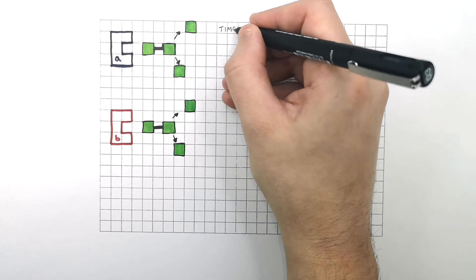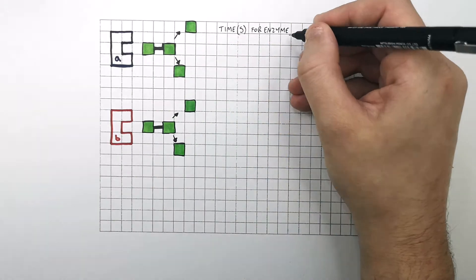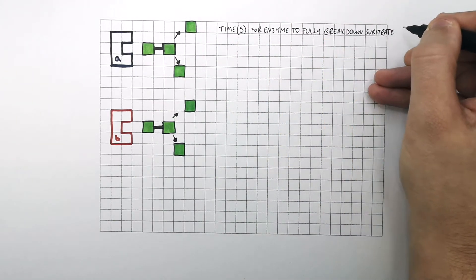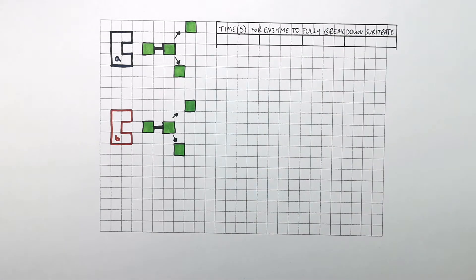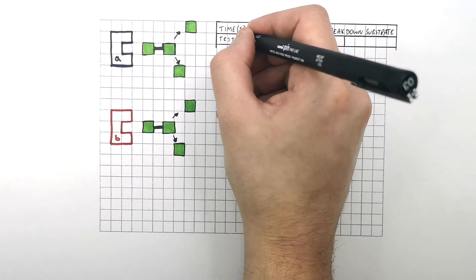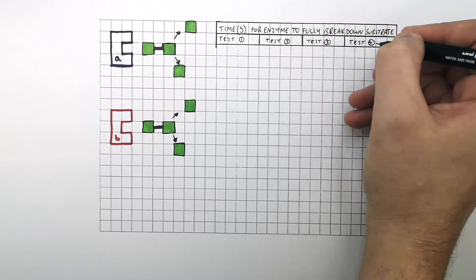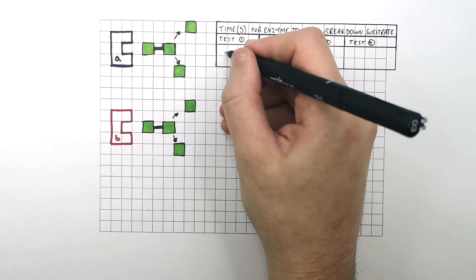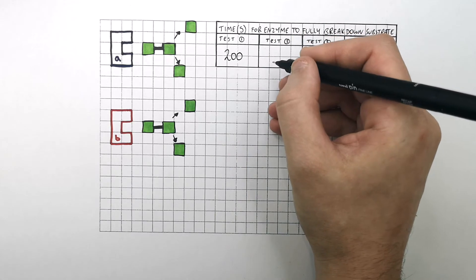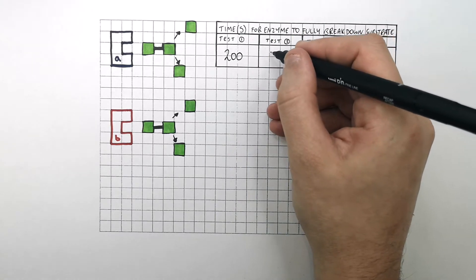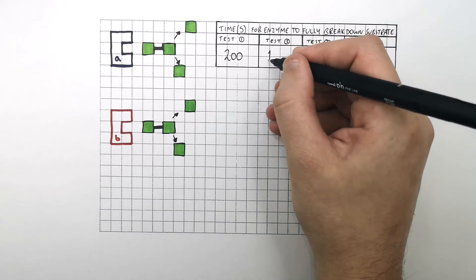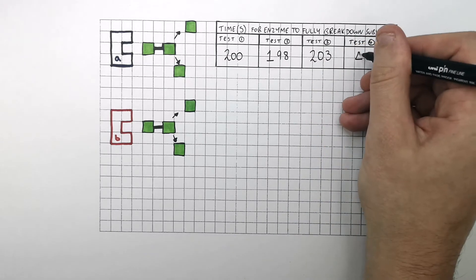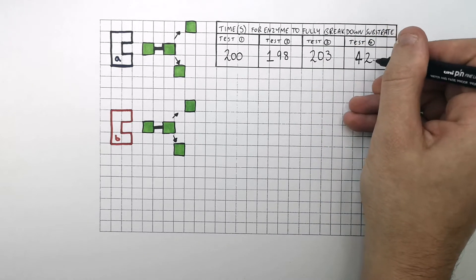The time in seconds for the enzyme to fully break down the substrate into the product is as follows. We did four tests. In test 1, the enzyme took 200 seconds to break down the substrate fully into its product. Test 2 was 198 seconds. Test 3, 203 seconds. And test 4, 420 seconds.